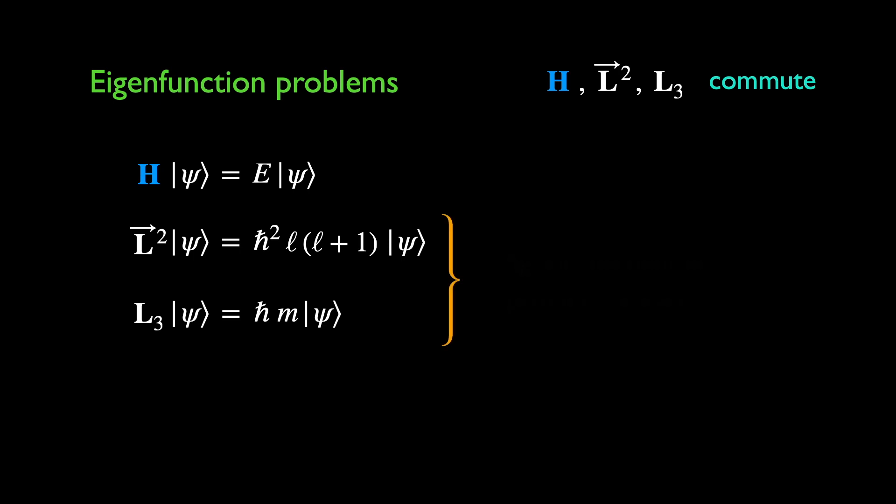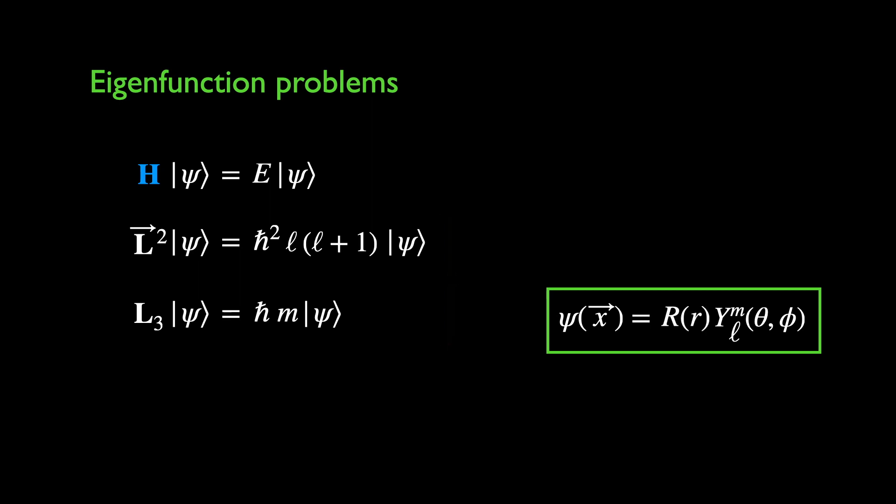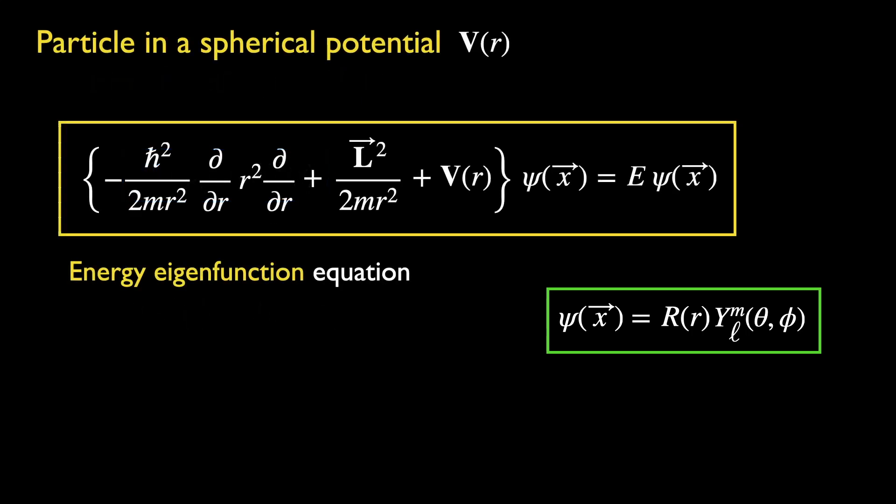Thus we have solved the angular momentum part of the eigenfunction problems. These constitute the angular dependence of the wave function. The radial part is still unconstrained by these equations. This is to be fixed by the energy eigenfunction equation. We will solve this in the next lecture, when we introduce specific examples of a particle moving in central potentials.